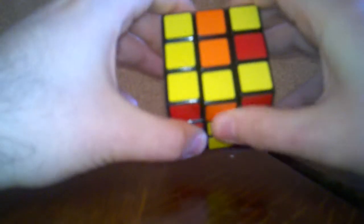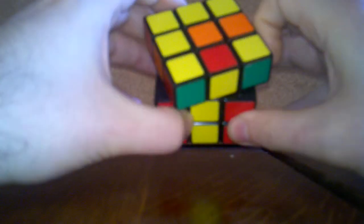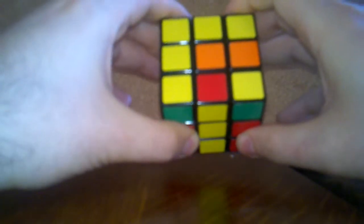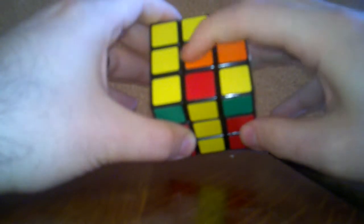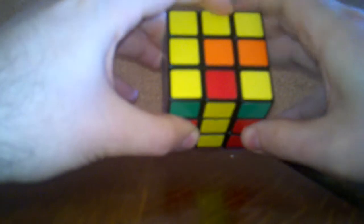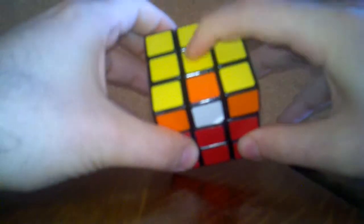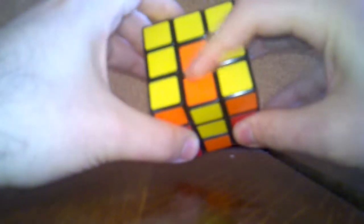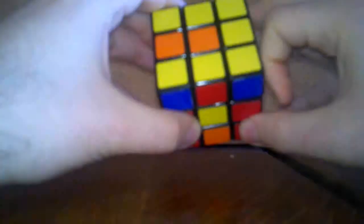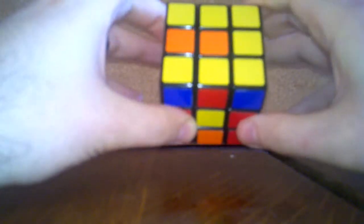So you bring the middle up and then you rotate it. Now if you lose your place, you can remember: if this is not yellow, you need to make it yellow. And then you rotate it again. If this is yellow, you need to take the yellow away. And then you rotate it again. And that's how you can remember if you get confused.